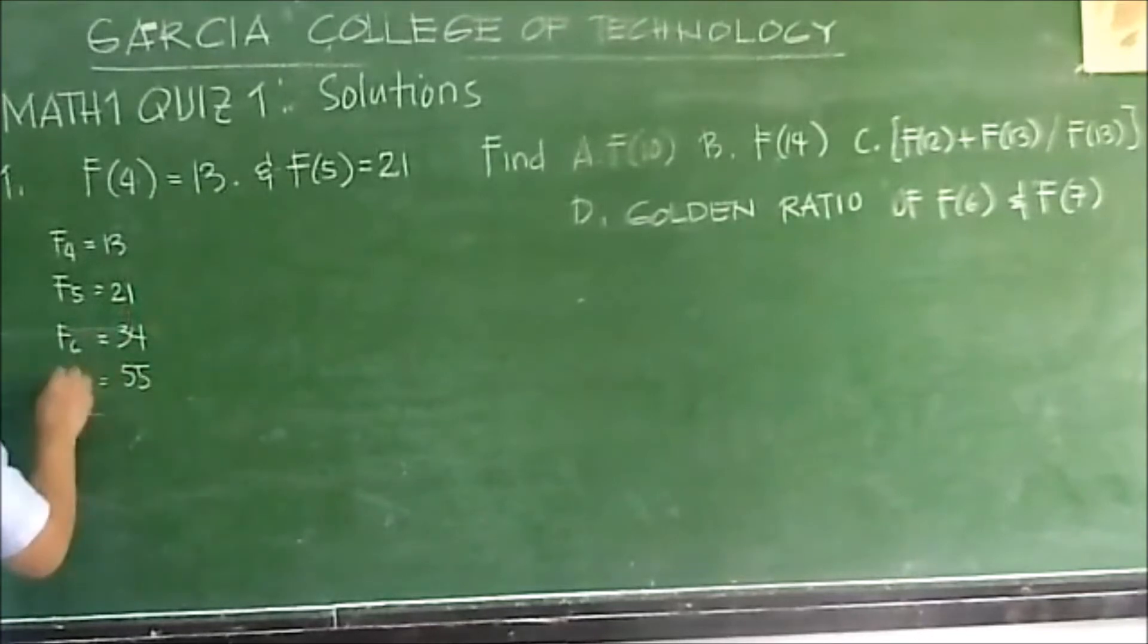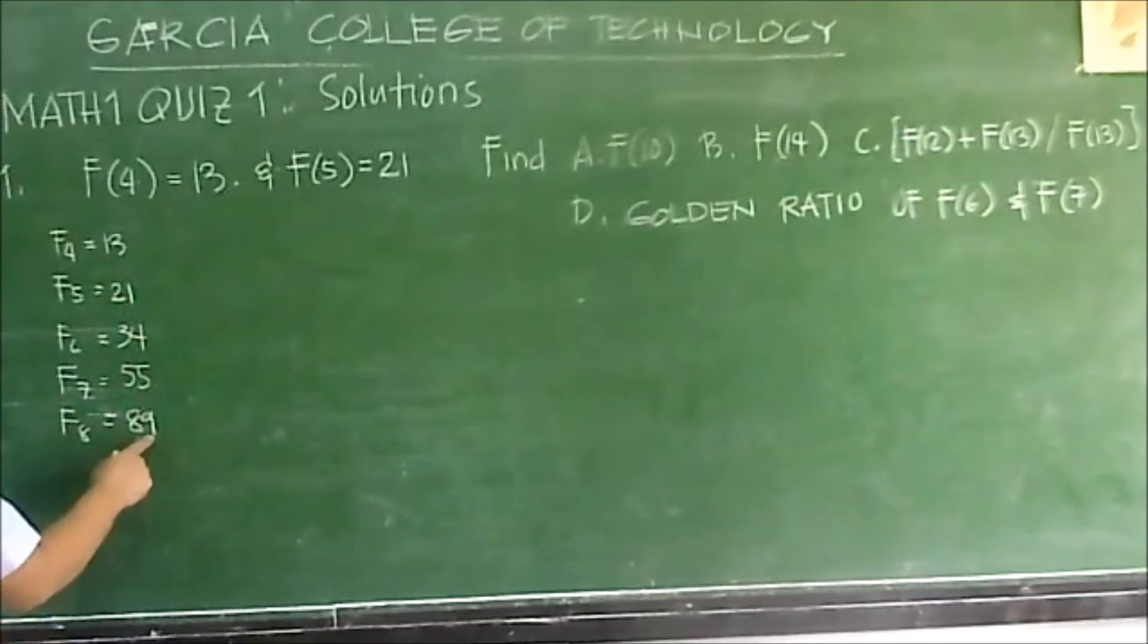Next, 21 plus 34, that will be 55. This is F sub 7. Next, this is 89, this is your F sub 8.